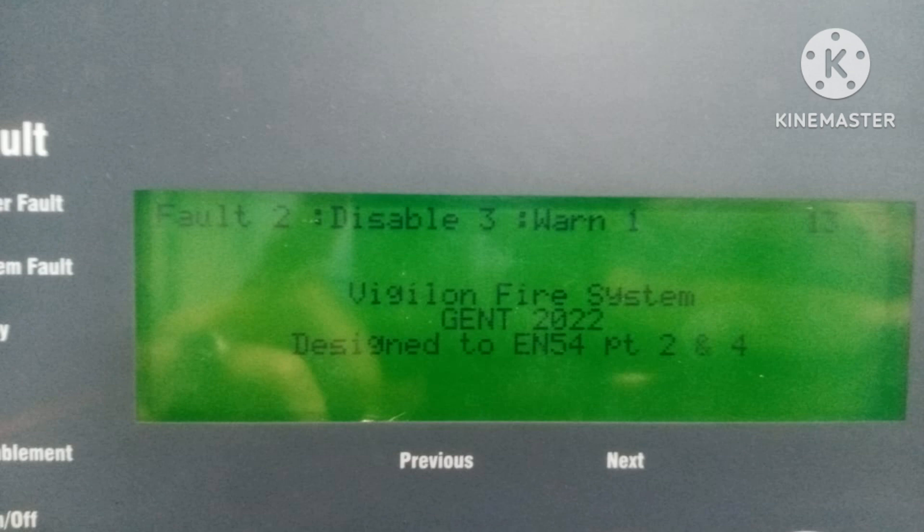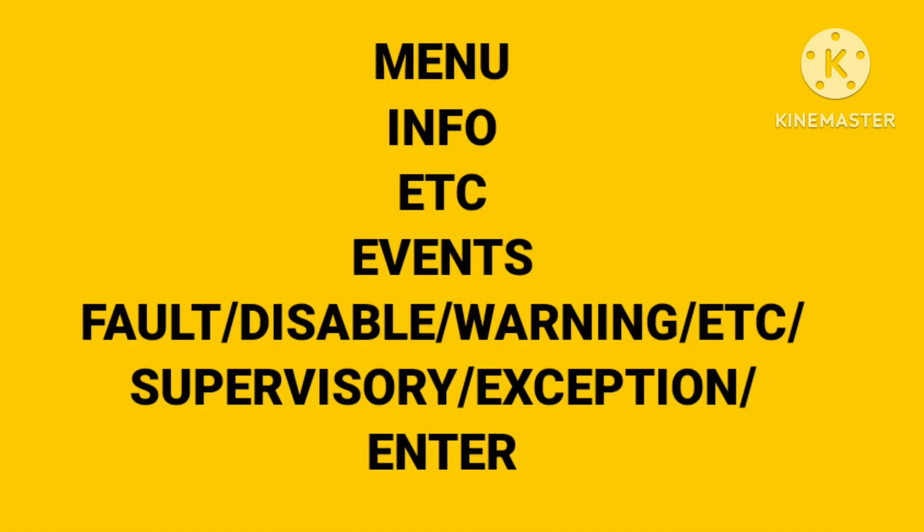We can easily check the disabled points and then solve them. For that, first we have to go to Menu, then Info, then Events. In that you can find Fault, Disable, Warnings, or Supervise Exceptions. To check the disabled, we will go into disabled points and then we can easily check them.